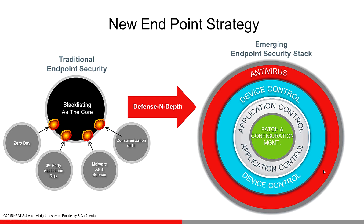In application control, we can also look at in-memory execution. Some of the latest APT-style attacks have used advanced techniques such as reflective memory injections, where they're actually injecting code into an existing process in memory — so the malware never touches the hard drive. It completely evades your traditional AV solution. Whereas with app control, we can monitor that execution in memory and actually spot and terminate those processes when seen.